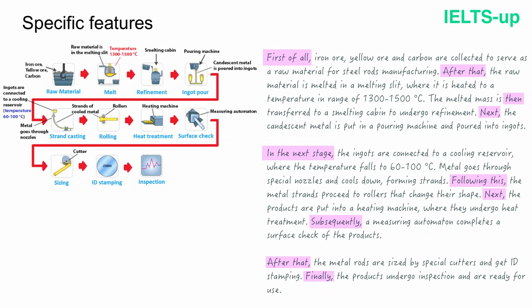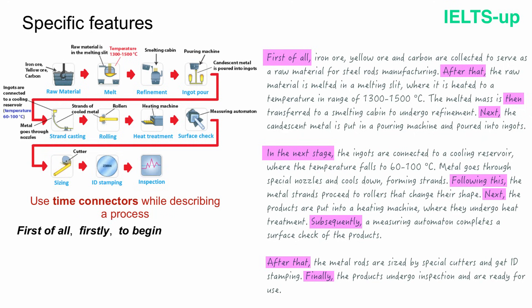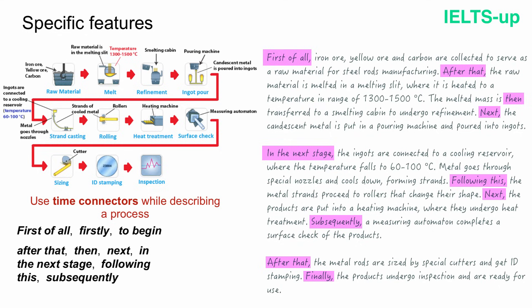You can see that I used a lot of time connectors while describing the process. A process is a series of changes that happen over time, so time connectors are extremely important for writing about process diagrams. To start describing the first stage, I used 'first of all' — you could also use 'firstly' or 'to begin.' To move on to the next stage, I used: 'after that,' 'then,' 'next,' 'in the next stage,' 'following this,' and 'subsequently.' And to describe the last stage, I used 'finally.' Using these time connectors makes your writing more coherent and will help you achieve a higher score.